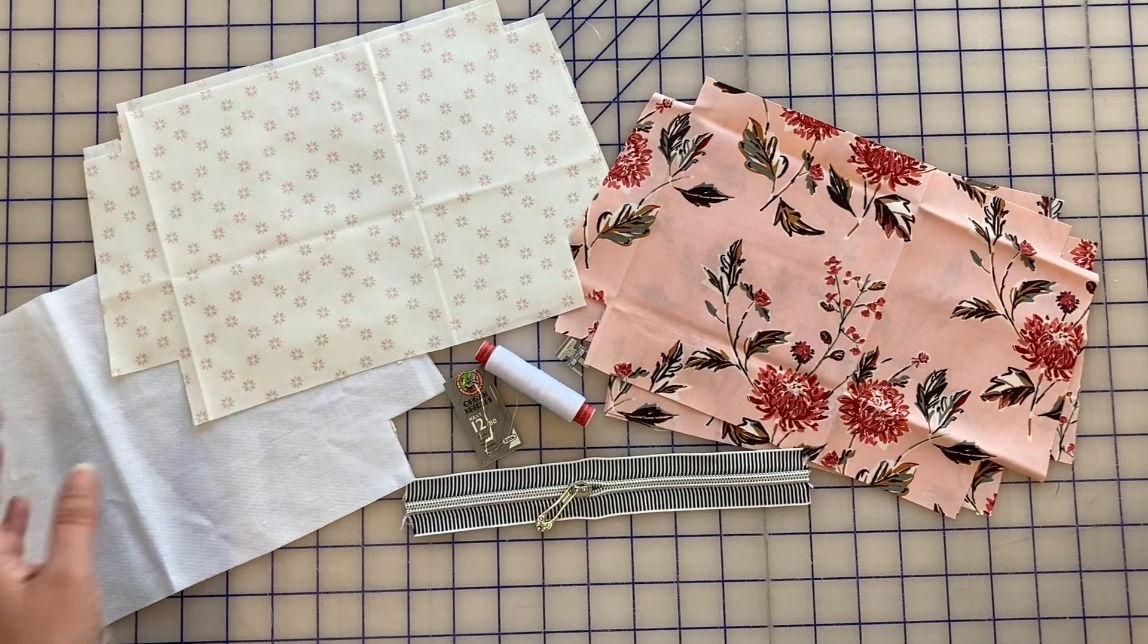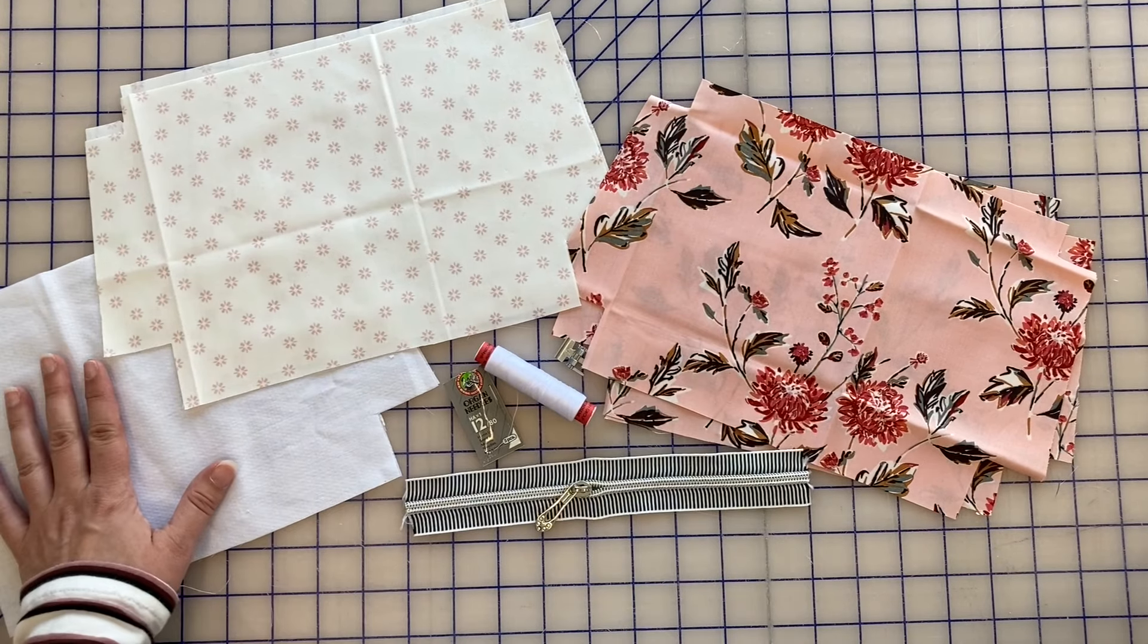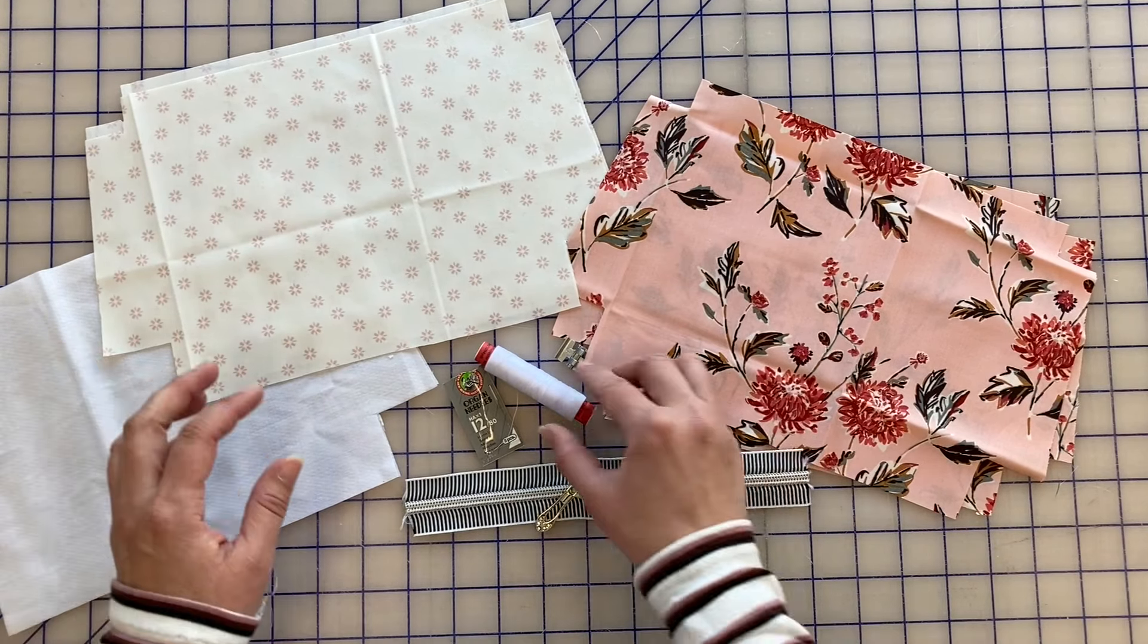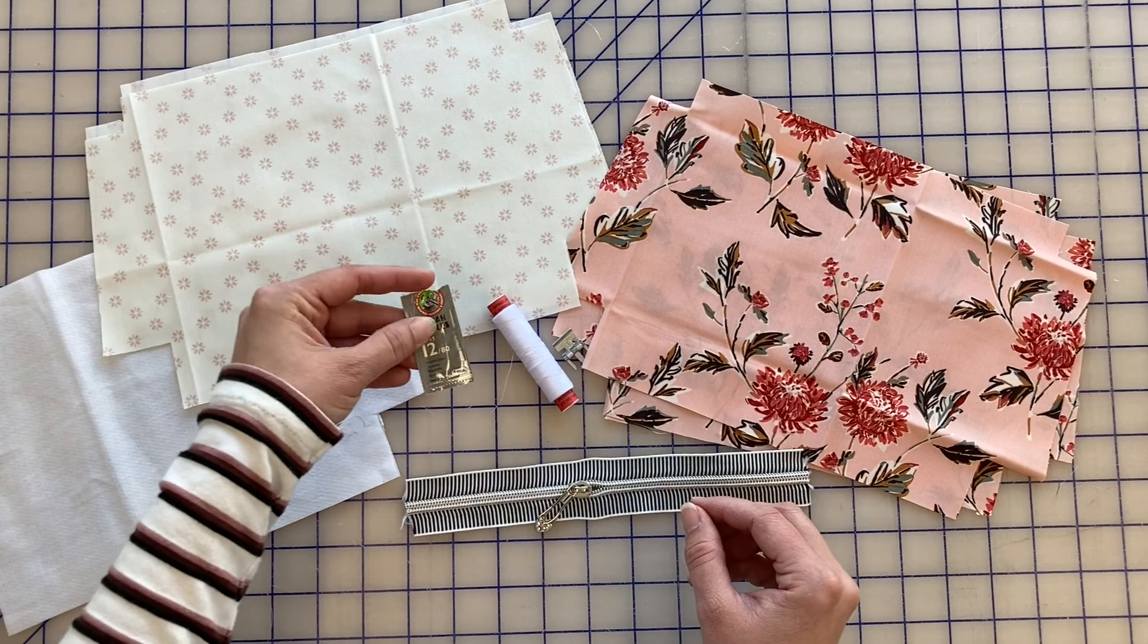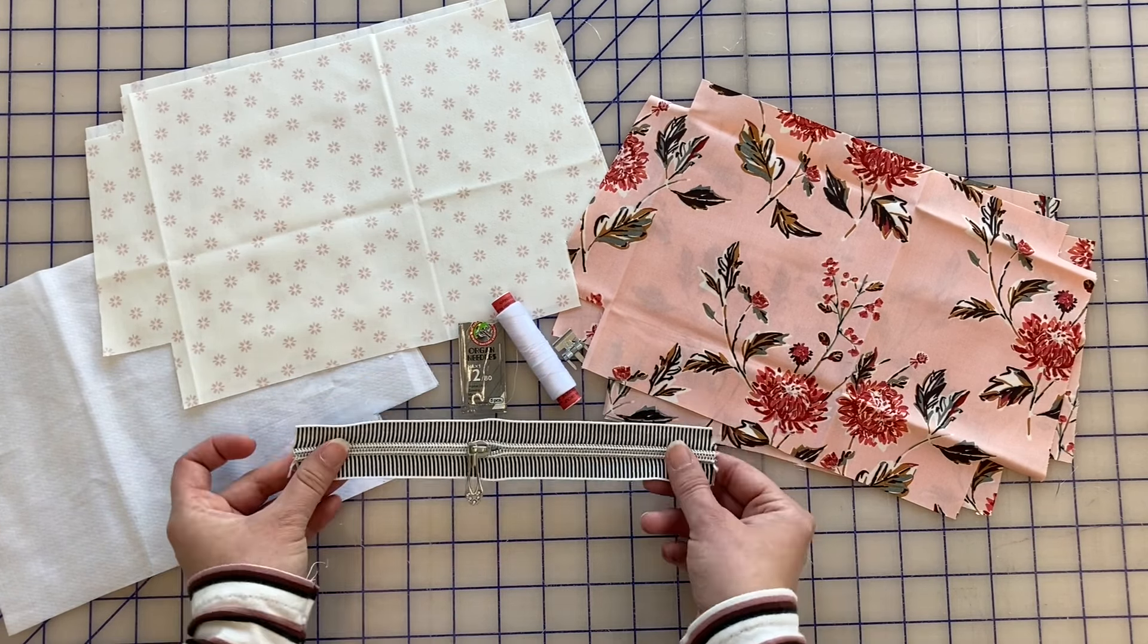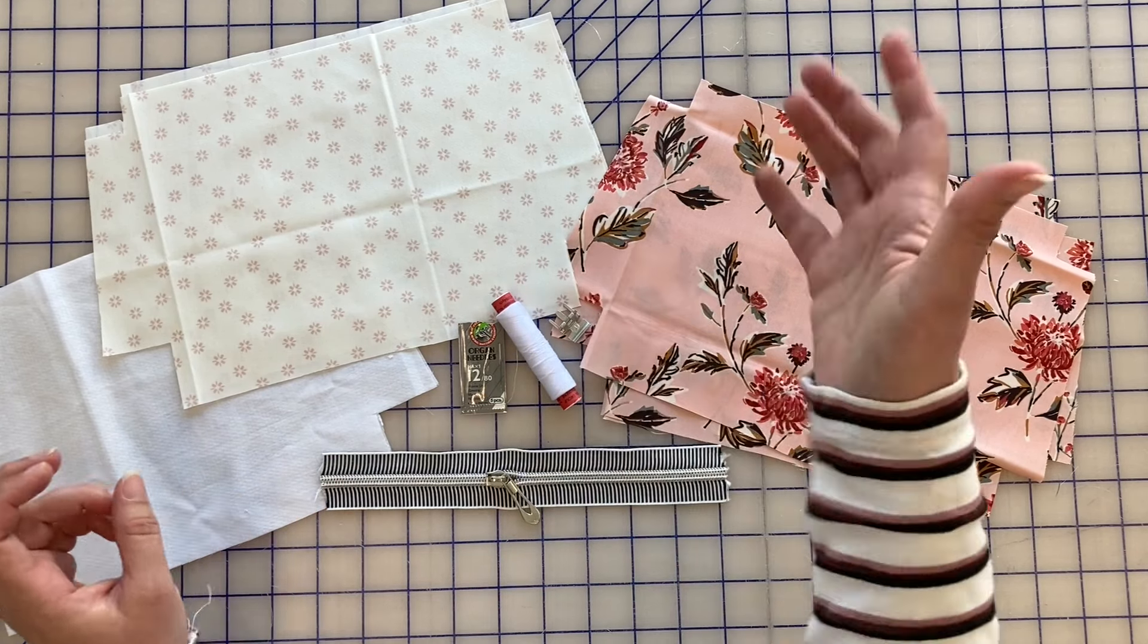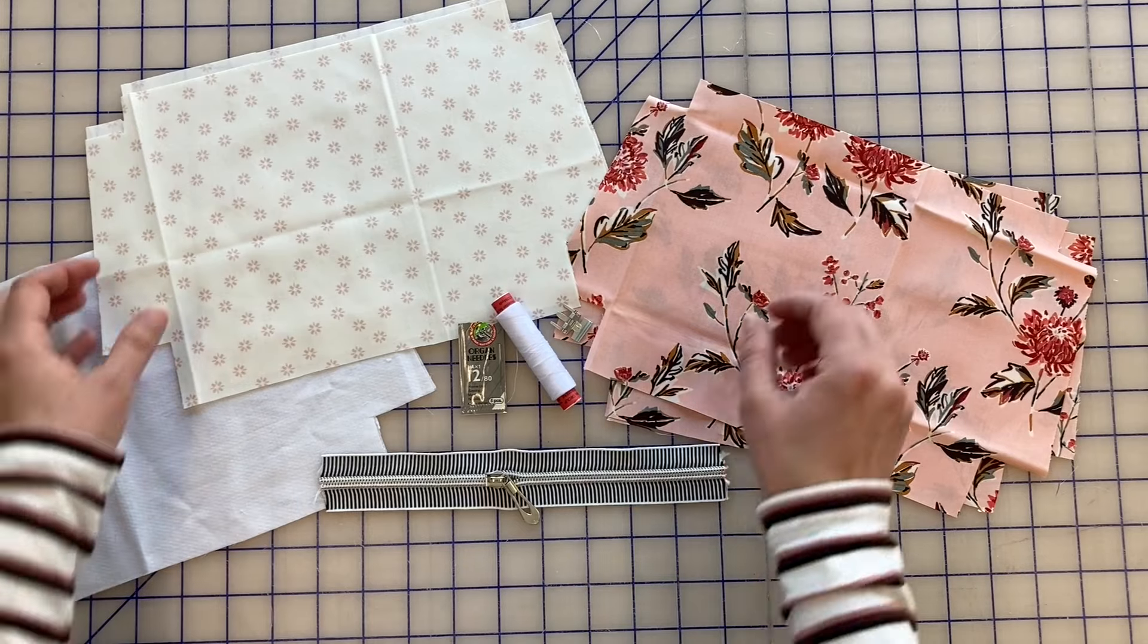We need to cut that pattern out of the exterior fabric, the lining, and fusible interfacing. You need thread, an 80 needle or universal needle, nine inches of zipper tape or a nine inch long zipper, and you need your zipper foot plus your regular foot for your sewing machine.